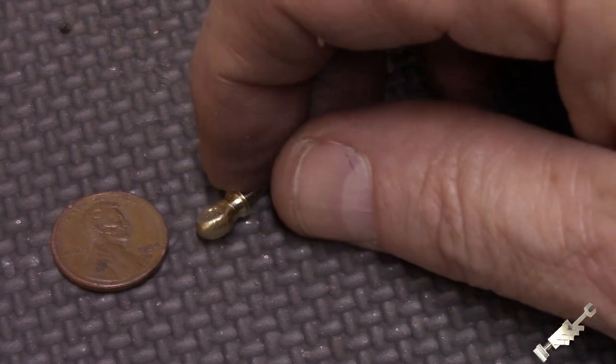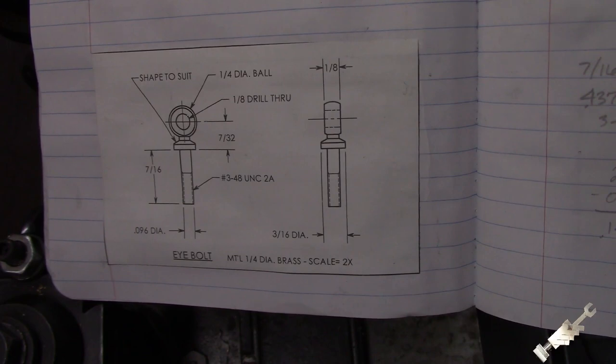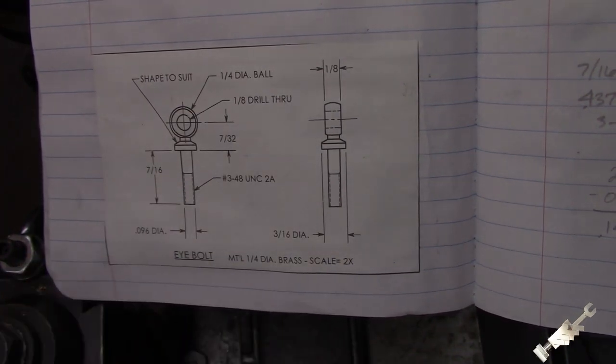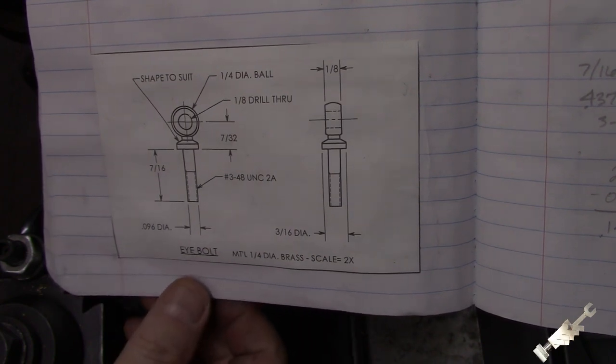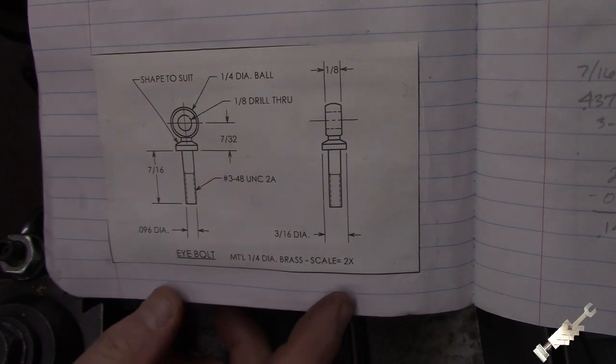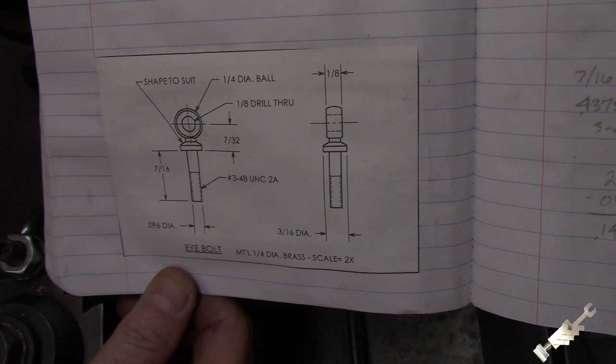Leave some comments if you are so inclined. All right, so here are the just the dimensions of the lifting eye and it's not a complicated piece, but the order of operation is somewhat important. So let me show you what we got happening here.